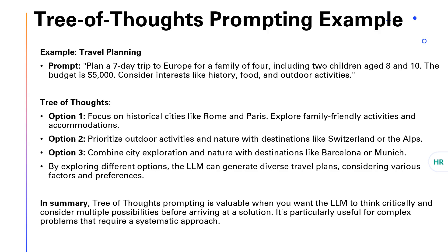A good example is travel planning. Say the user prompts: 'Plan a seven-day trip to Europe for a family of four, including two children aged eight and ten. The budget is $5,000. Consider interests like history, food, and outdoor activities.' With Tree of Thoughts, your application sends three different prompts to the LLM: Option one — focus on historical cities like Rome and Paris, exploring family-friendly activities and accommodations. Option two — prioritize outdoor activities and nature with destinations like Switzerland or the Alps. Option three — combine city exploration and nature with destinations like Barcelona or Munich. By exploring these options, the LLM generates diverse travel plans and presents them as separate potential solutions for the user to consider.